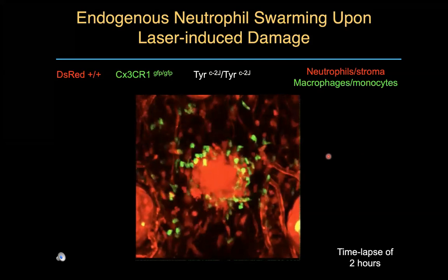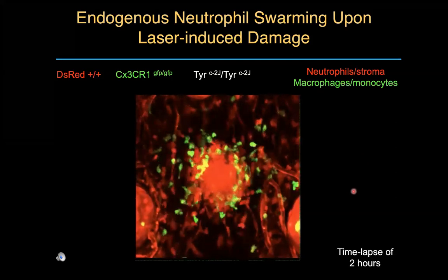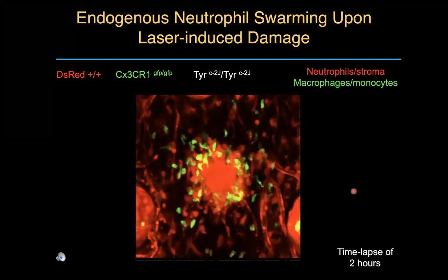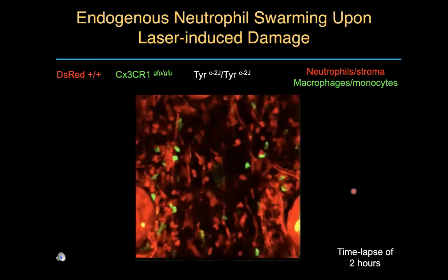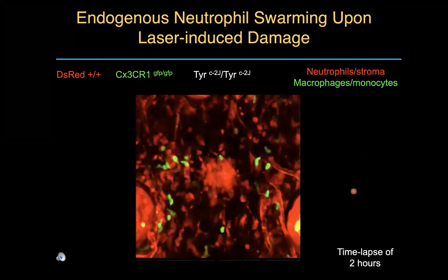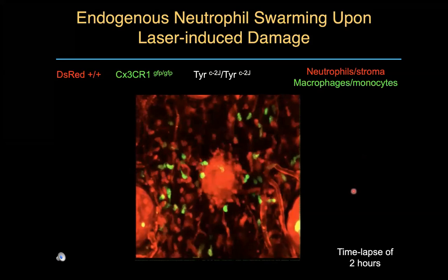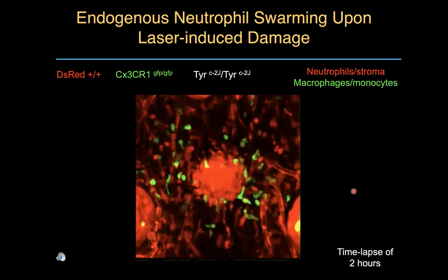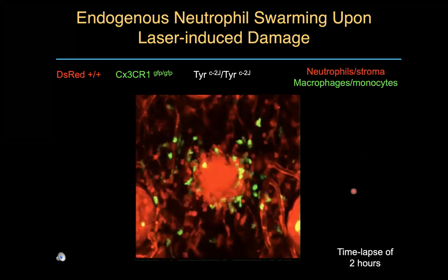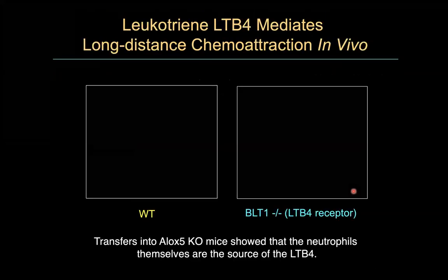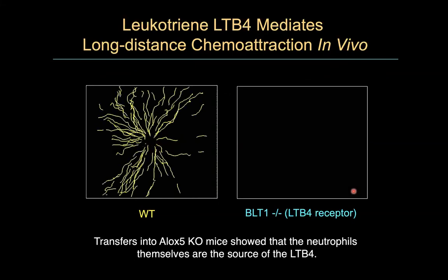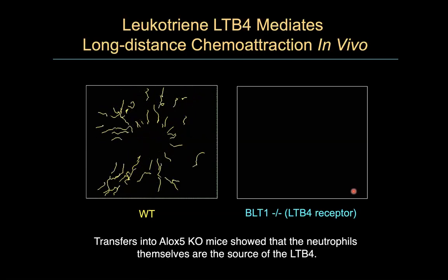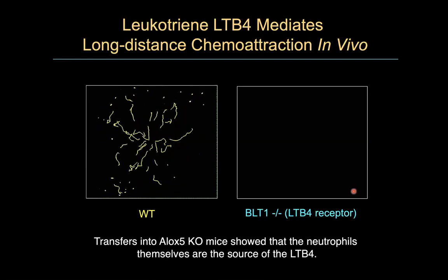When we do that — the red neutrophils in this particular case, green are monocytes — we get the swarming behavior, accumulating in the center at the lesion. It's only later that the monocytes come and are attracted. In fact, if we deplete neutrophils, the monocytes never find the lesion — so they're secondarily recruited by the neutrophils.